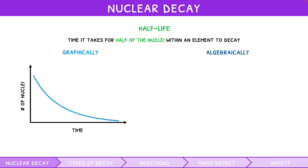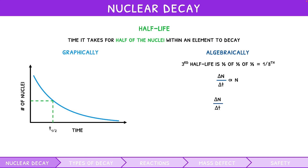A typical graph of nuclear decay plots the number of atoms, or radioactivity, against time. We can draw a line at the point where half of the atoms have decayed, and use this to find the half-life. Note that a half-life compounds — if you are asked to find the third half-life of an element, you are asked to find the time at which one half of one half of one half of the initial undecayed atoms remain, i.e., one eighth. Because of this compounding, the rate of decay is proportional to the number of atoms, i.e., it decreases as the number of atoms decrease. The formula for this is: the change in atoms over the change in time equals negative decay constant times the initial number of atoms.